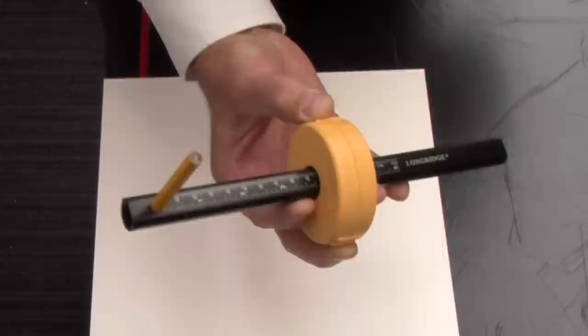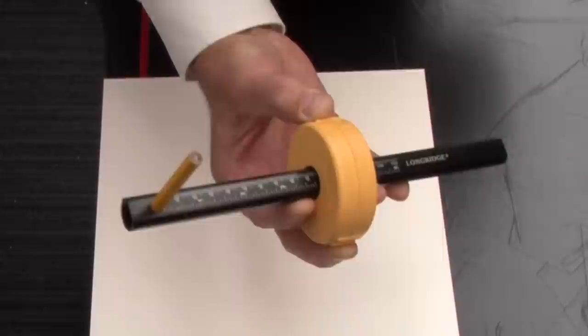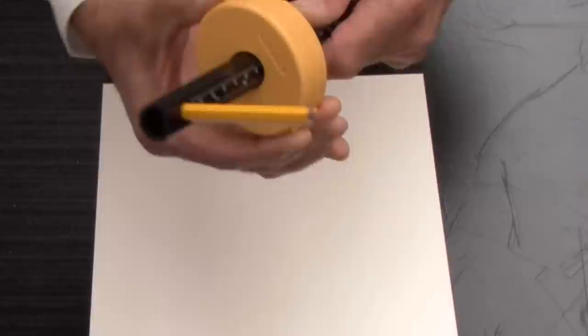And what we do is we set a dimension. I'm going to just use an example of two and a half inches. So we move the block up the shaft and the face of the block registers to the measurement that we want.